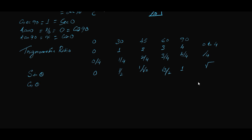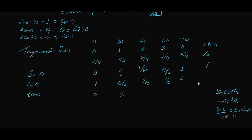For cos θ, simply write the sin values in reverse order, because they are complementary: 1, √3/2, 1/√2, 1/2, and 0. For tan θ, we know tan θ equals sin θ divided by cos θ, which gives perpendicular by base. Dividing each corresponding sin and cos value gives tan values: 0, 1/√3, 1, √3, and not defined.